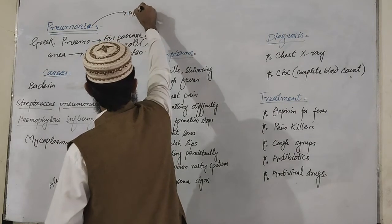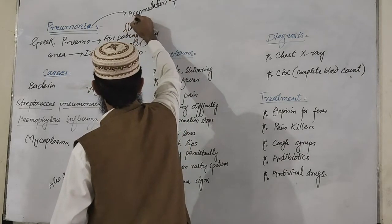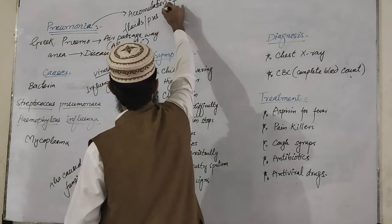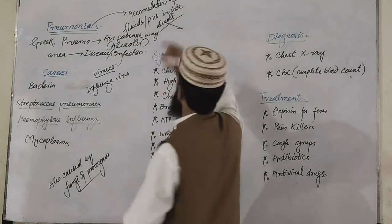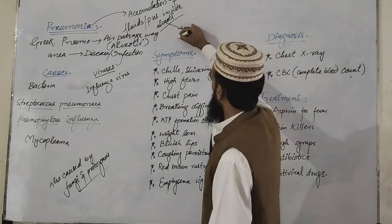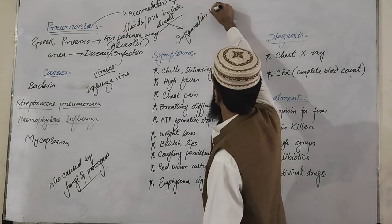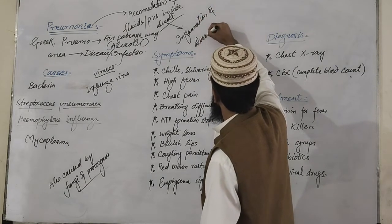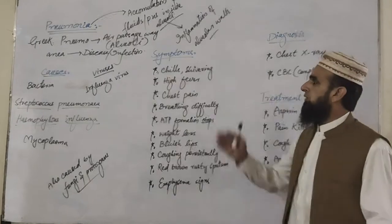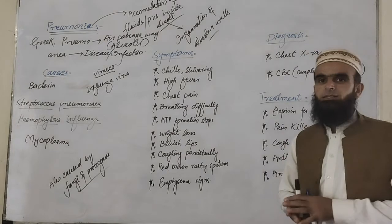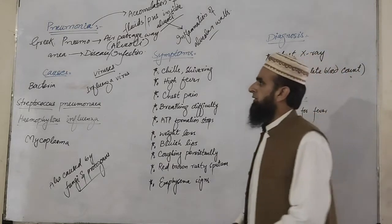Pneumonia is the accumulation of fluids or pus inside the alveoli, as a result of which the alveolar walls become inflamed. Inflammation of the alveolar walls is caused. So when such conditions occur inside the lungs and inside the air passageways, it is called pneumonia.